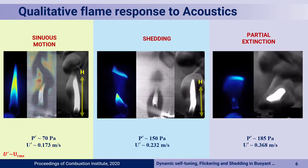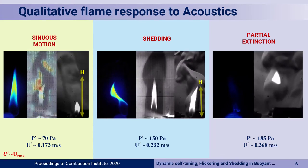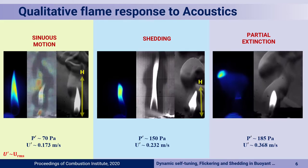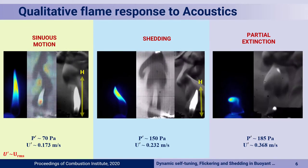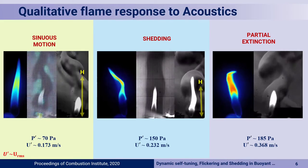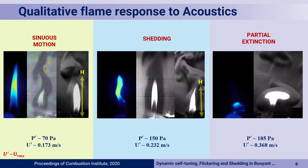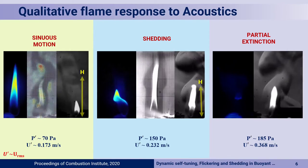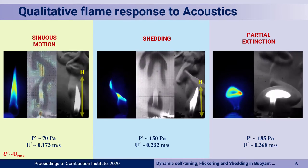One thing to be noted is that U', which is basically the velocity induced by the acoustics, also increases. This velocity is of the same order as the natural circulation velocity that the flame inherently generates — approximately 0.21 meters per second. In the case of partial extinction, however, we have more forced convection effect, as we will see later.